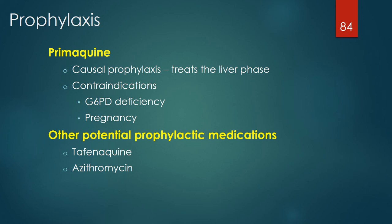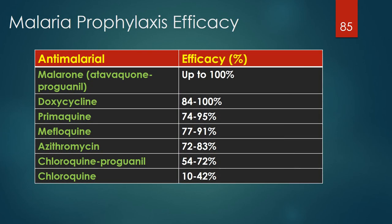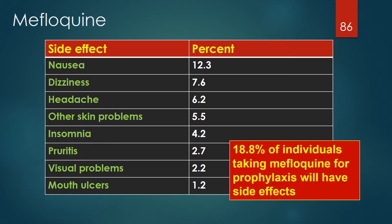Primaquine is a causal prophylactic medication since it treats the liver phase of the parasite before it reaches the blood. Contraindications for primaquine prophylaxis include G6PD deficiency and pregnancy. Other potential prophylactic drugs include tafenoquine and azithromycin. The best prophylactic regimens are Malarone, doxycycline, primaquine, and mefloquine. Approximately 18.8% of individuals taking mefloquine for prophylaxis will have side effects, most commonly nausea, headache, dizziness, skin problems, and insomnia.